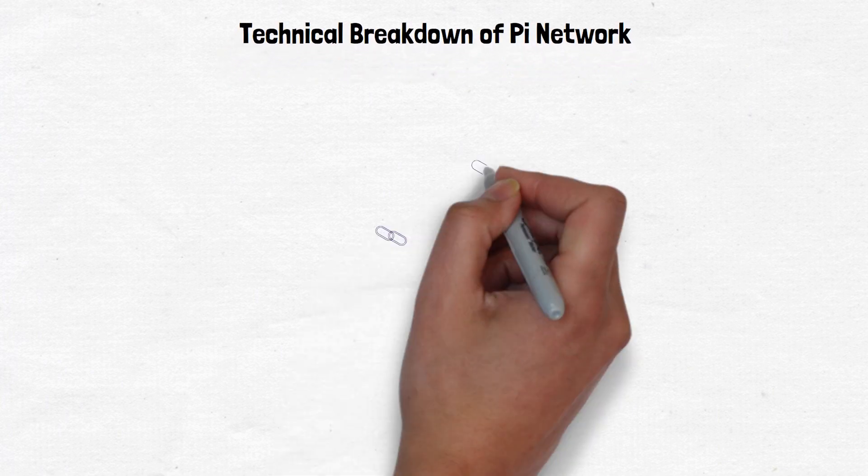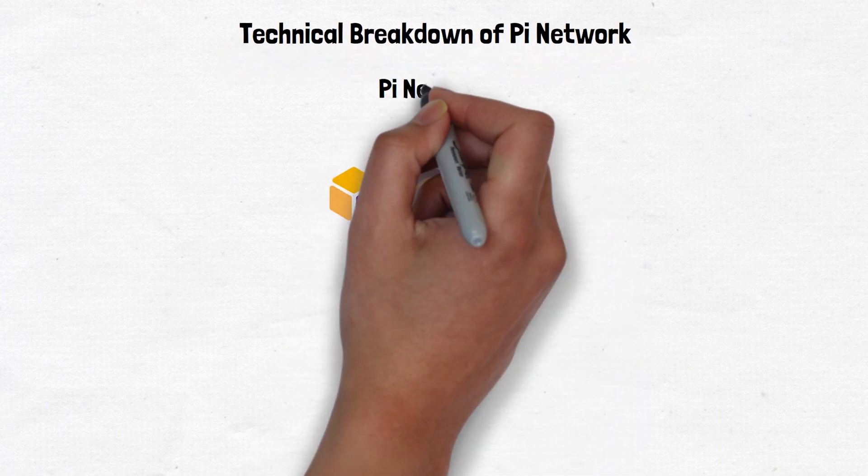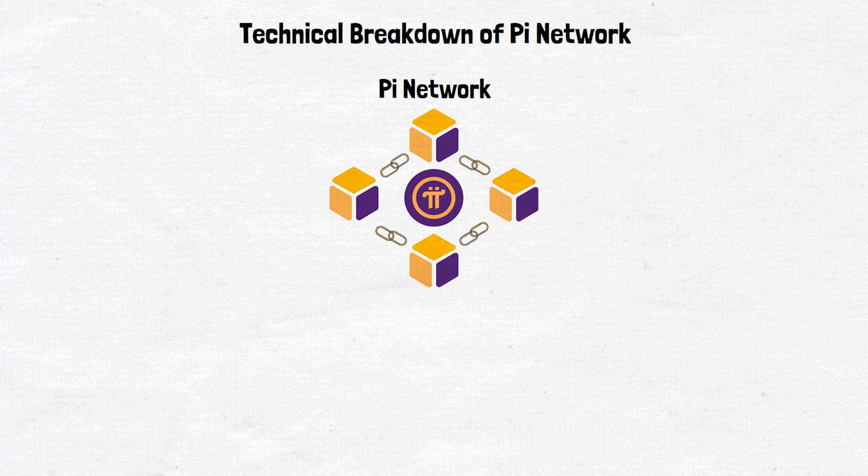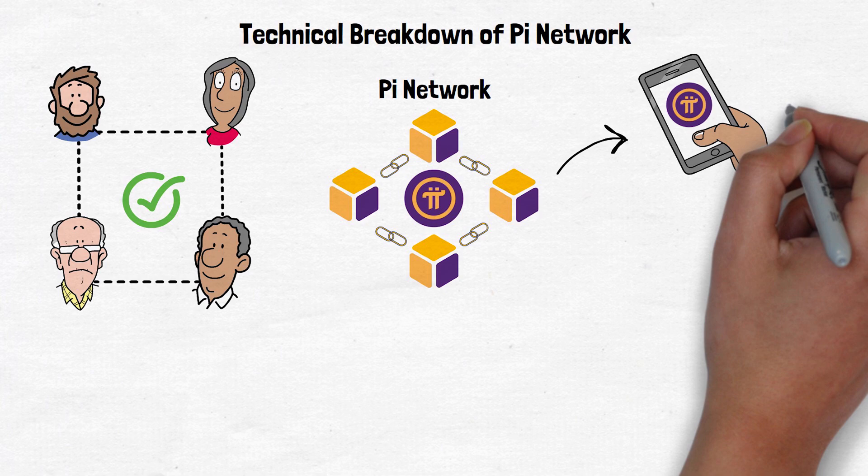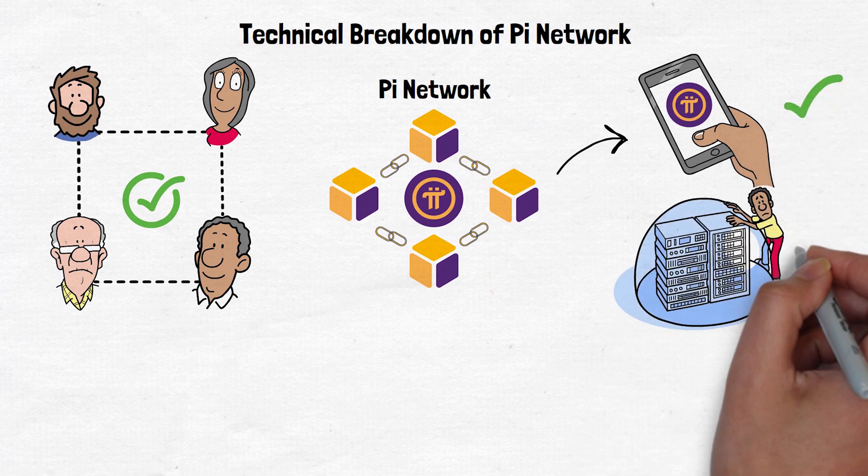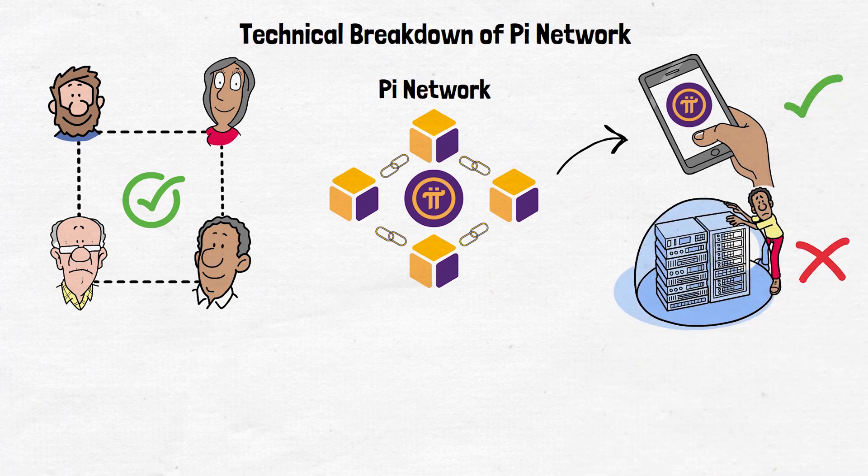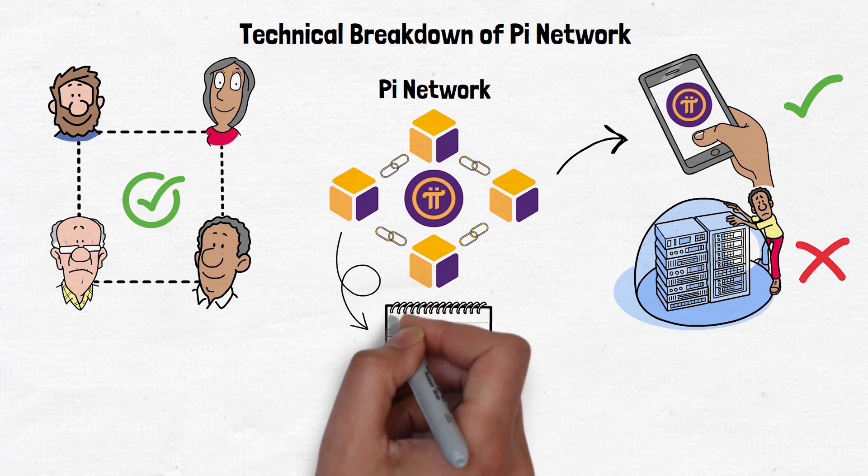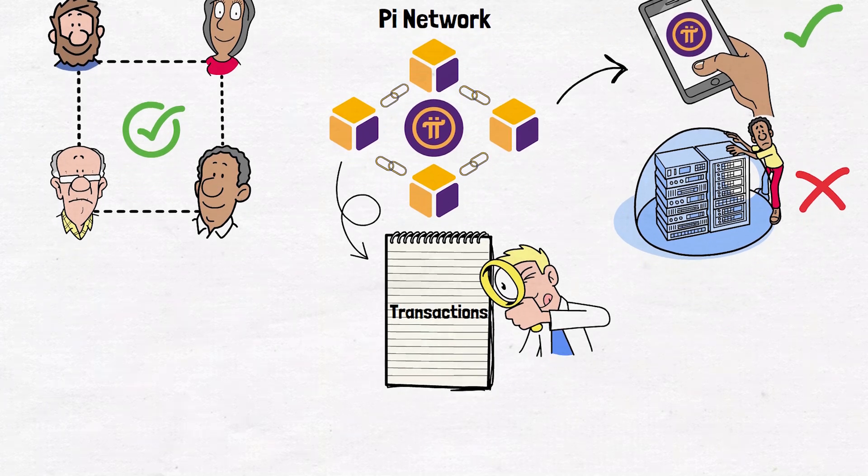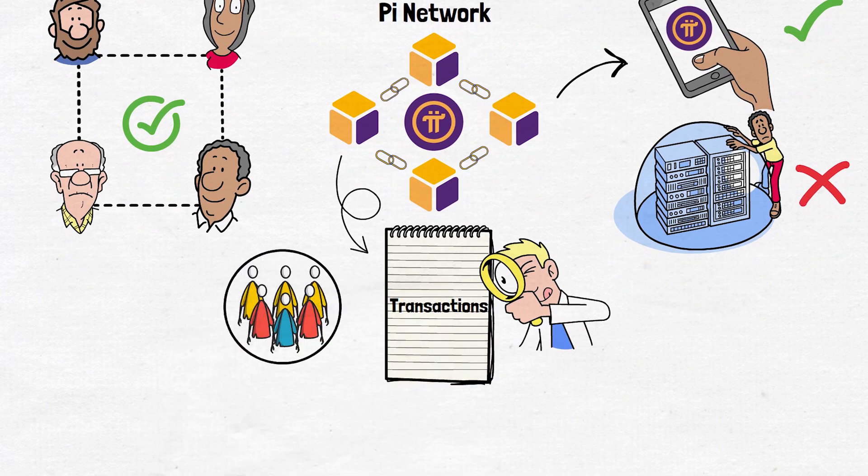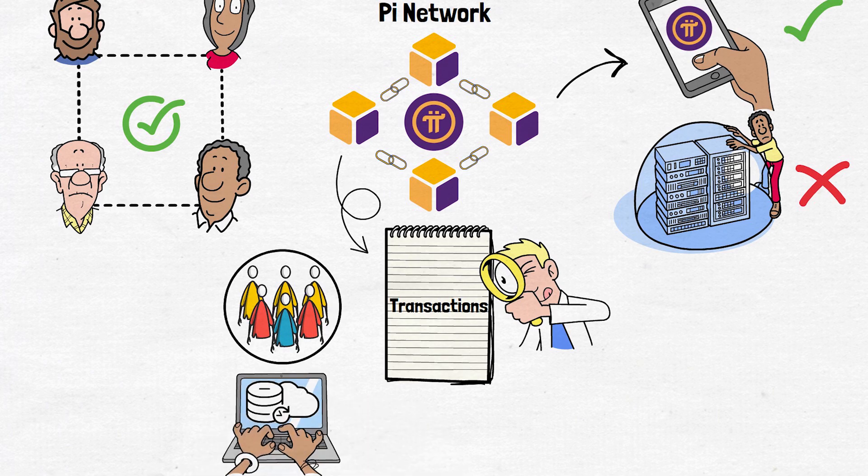At its core, Pi operates on a blockchain called Pi Network, which basically is a decentralized system where data is shared and verified by a network of participants. But this isn't really your typical blockchain. Pi uses a lightweight model that can run efficiently on smartphones rather than large-scale servers. Here's how it works in simple terms: Imagine a public ledger, similar to a notepad that everyone can see but no one can change. Transactions made on Pi are validated by its security circles we mentioned earlier, and nodes run by users. These nodes are simply computers that keep the system running and ensure all transactions are secure.